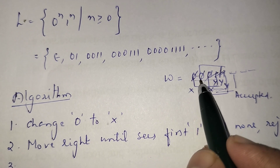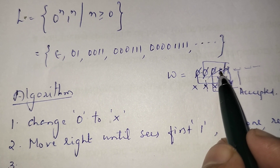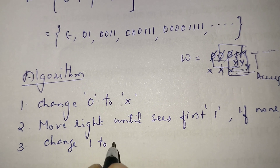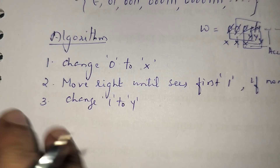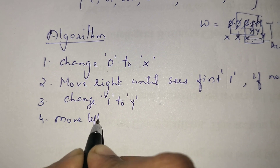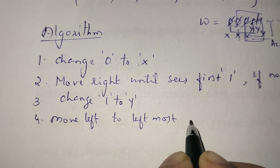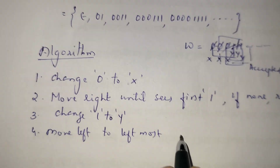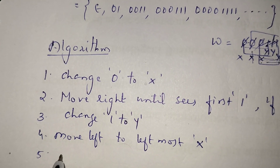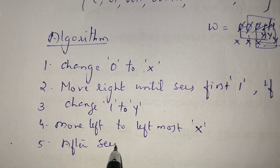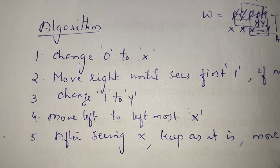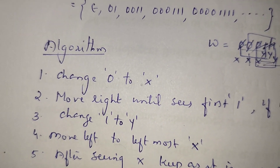After replacing the first 0 with x, we move towards right. We will see some 0s — don't do anything. If we see a 1, replace it with y. After replacing with y, I need to move left — move left to the leftmost x. Whenever I see x, keep as it is, then move one step right. Then repeat the procedure.